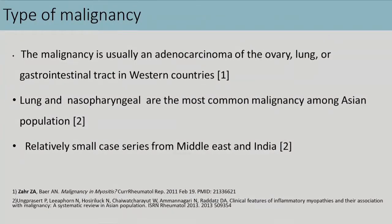When it comes to ethnicity, adenocarcinoma of the ovary, lung, and GI tract is more common in Western countries, while lung and nasopharyngeal cancer are more common in Asian populations. Unfortunately, we don't have enough data to estimate the incidence or type of tumor in our area.